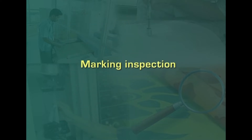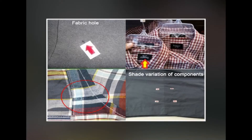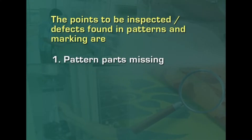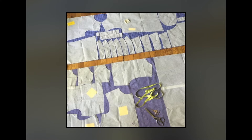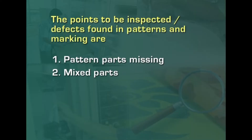Taking the marking inspection into consideration, it is not exaggerating to say that production costs are dependent upon how well the marker is made. The effective management of a garment industry is evident from the marker utilization of the fabric. The points to be inspected — the defects found in patterns and markings — include: pattern parts sometimes missing, meaning the correct number of parts for all sizes are not included by the marker maker. And then mixed parts, where parts are not correctly labeled in the marker.